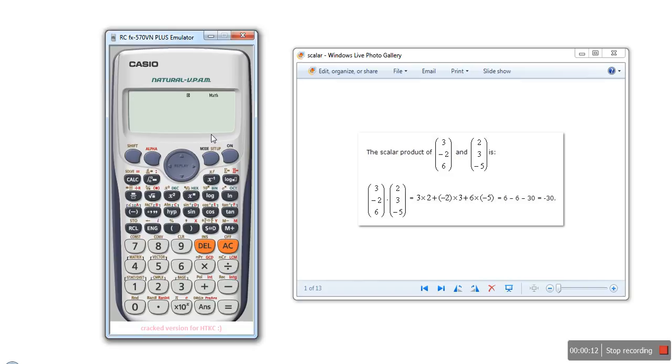In our calculator first we will set the mode for vector. Press mode key. It will show all the modes available in your calculator. We need to select vector mode, so for that we need to press key 8.